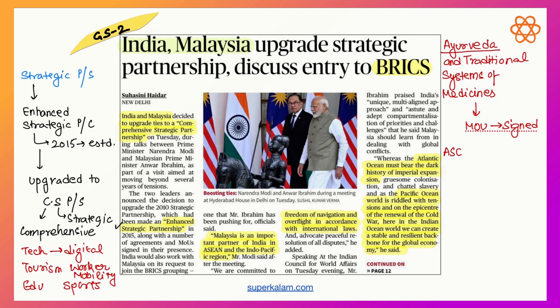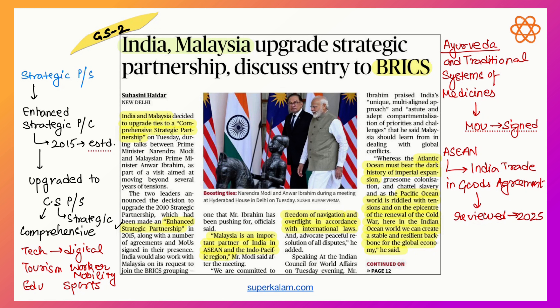There is another agreement signed at the ASEAN level — the India Trade in Goods Agreement — basically to make the relationship more business-friendly. It is currently in existence and will be reviewed in 2025 to assess its success. We also have a Strategic Rice Export Agreement, under which around two lakh metric tons of white rice will be exported. Additionally, we have UPI-related agreements with Malaysia which fall under digital technology.